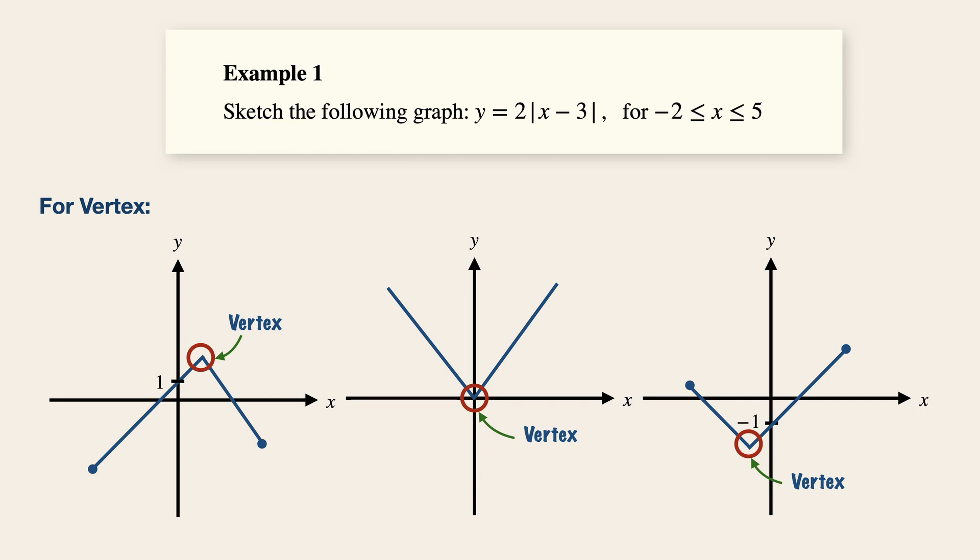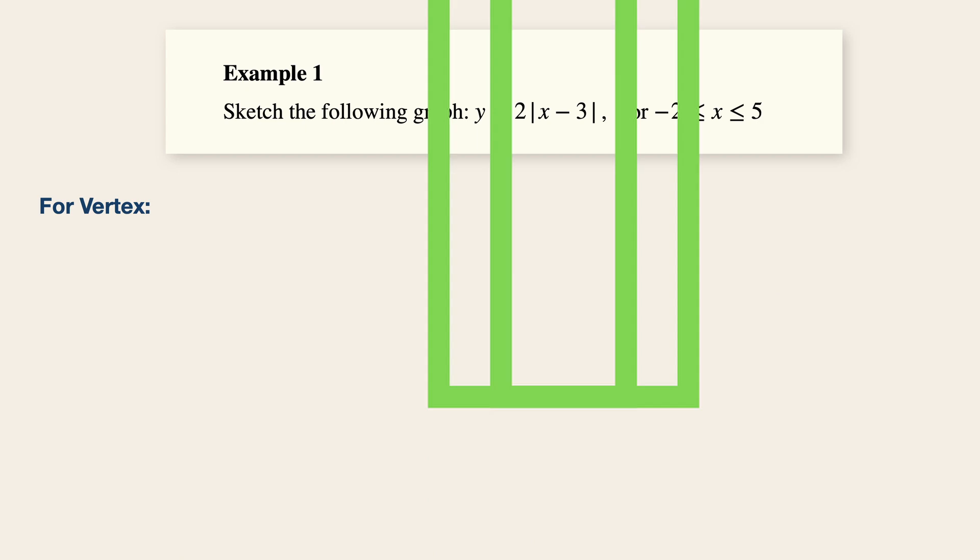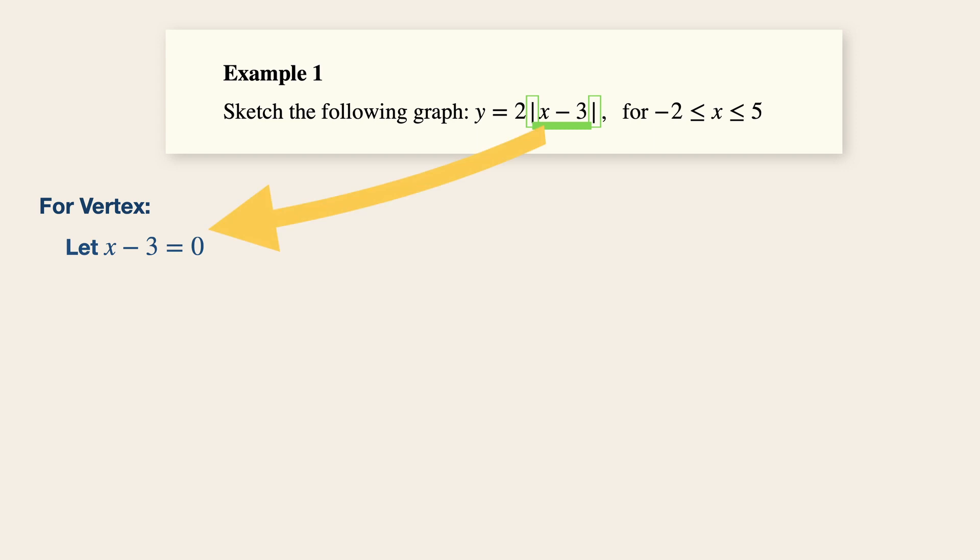In order to get the vertex, identify the modulus or absolute signs first. Now let whatever statements within the signs be zero. In this case, we are trying to get the value of x, which is three.